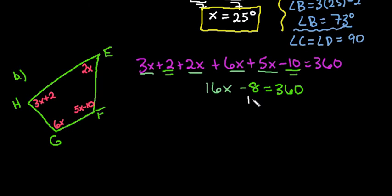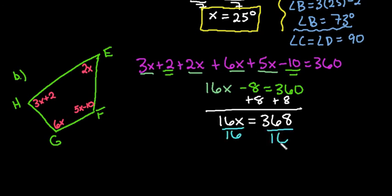So our next step would be to add the 8 to both sides, and I show every step. A lot of these you can do in your head. You don't have to show every single step, but in order for you to see what I'm doing, I do want to make sure that I show every step. And then our final step would just be to divide both sides by 16, and x goes into there 23 times.